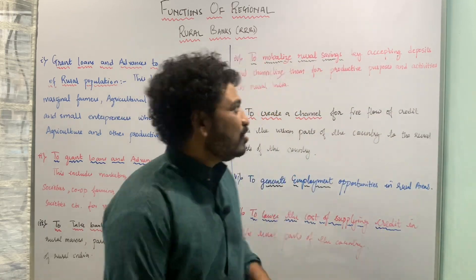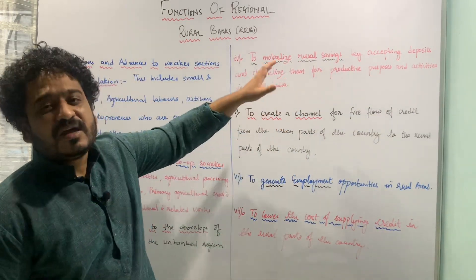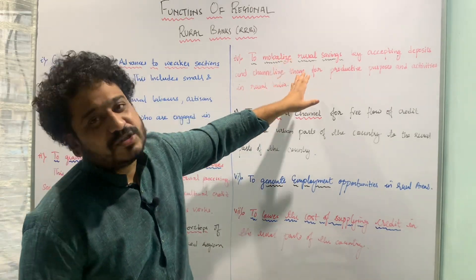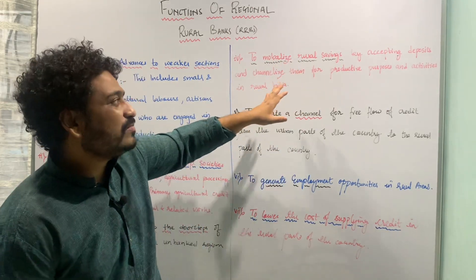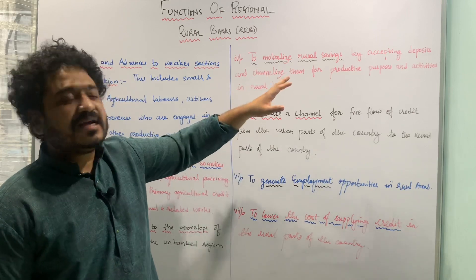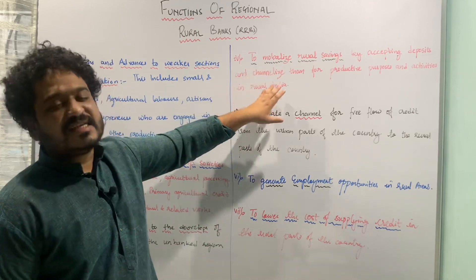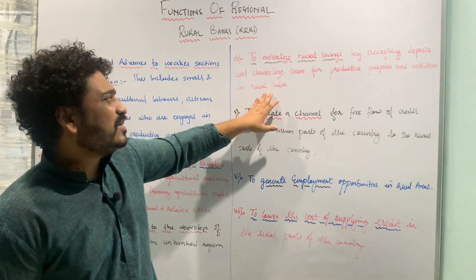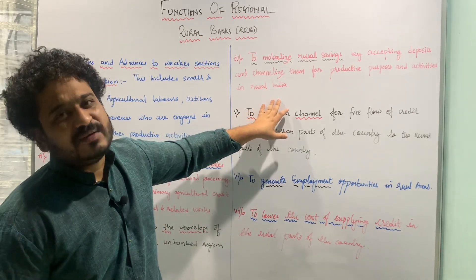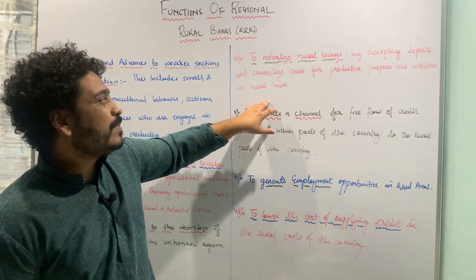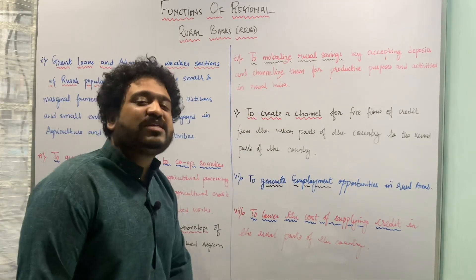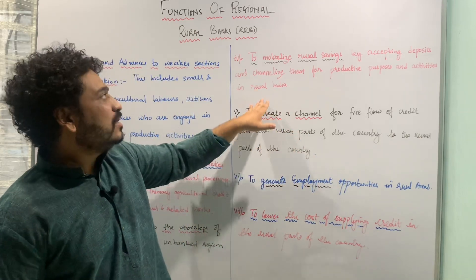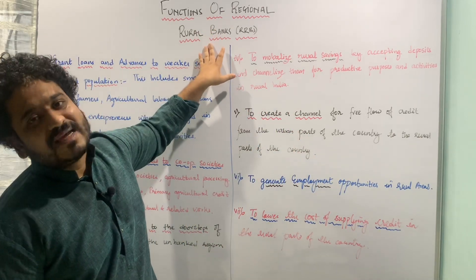The next important function of regional rural banks relates to the mobilization of savings in rural parts of the country by accepting deposits and channelizing them for various productive activities, both related to agriculture as well as any other productive activity happening in the rural part of the country.